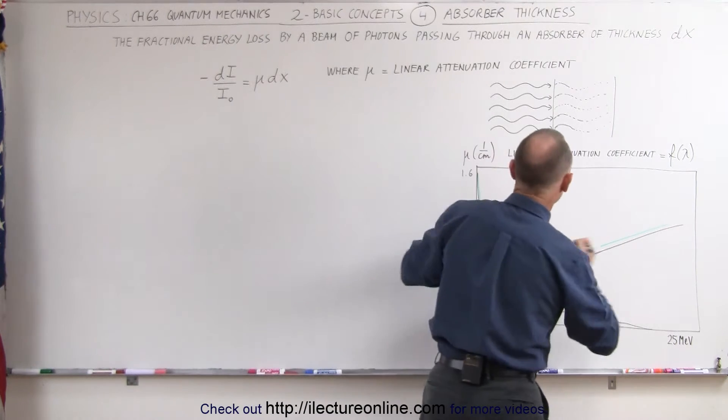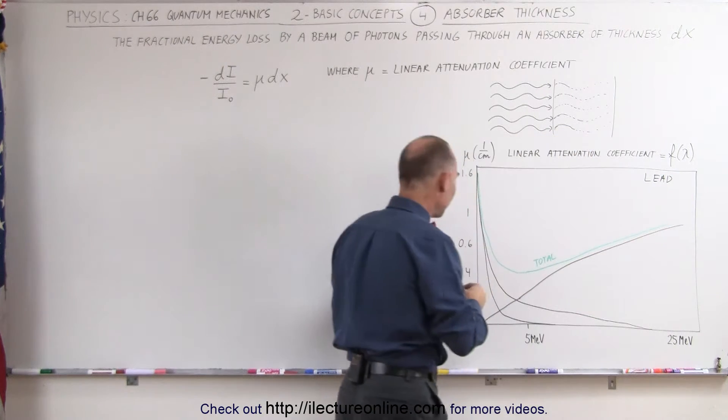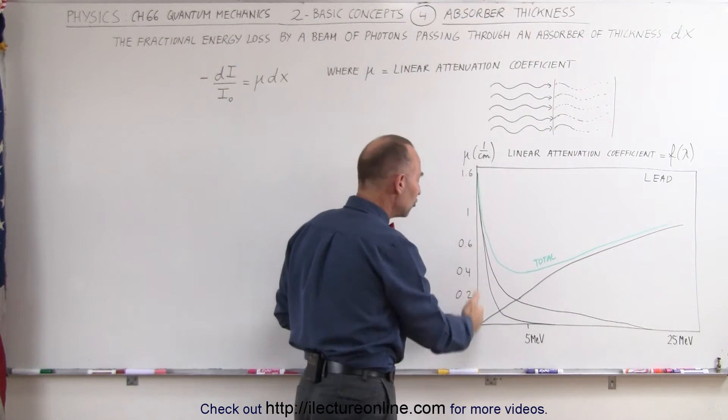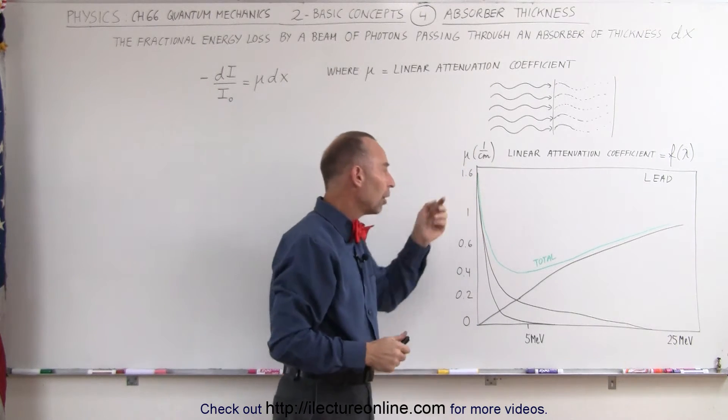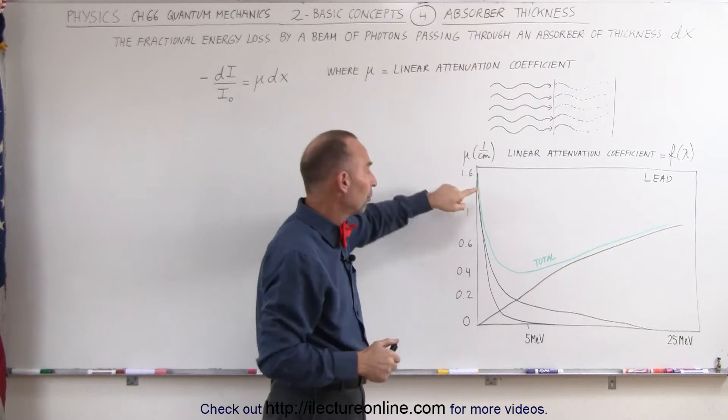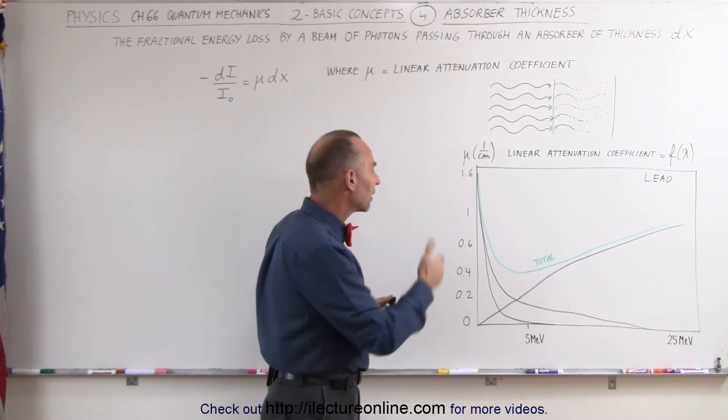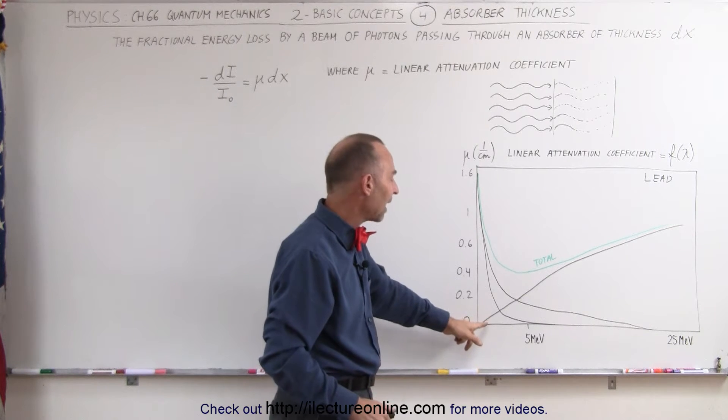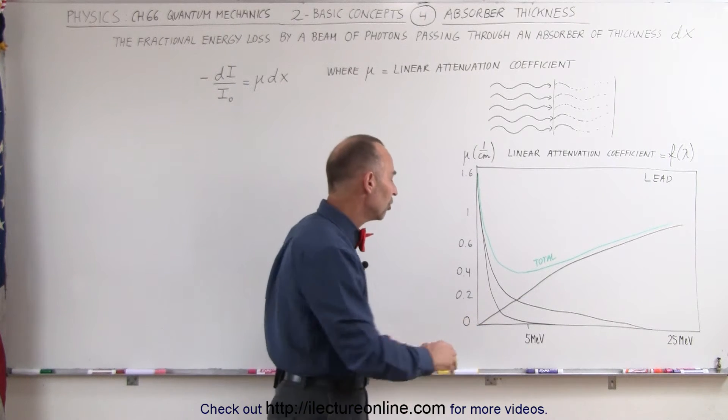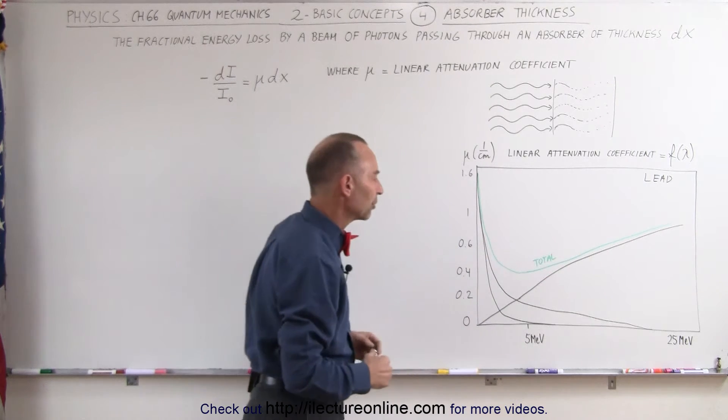And this would be for lead, I believe this picture represents lead. Notice that for the low energy radiation, lead is really good at stopping low energies to prevent the photoelectric effect and Compton scattering. And notice that it's not as effective initially to stop very high radiation energies that would then turn into pair production.